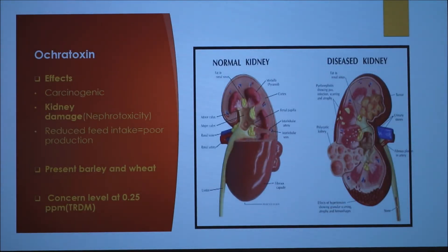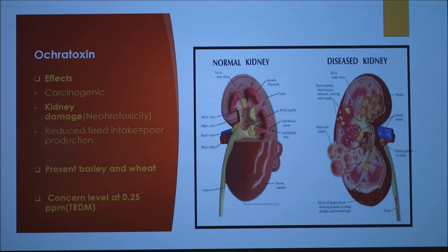Next we have ochratoxin, which is also a carcinogen, but instead of being a hepatotoxin it is a nephrotoxin, meaning it causes kidney damage in our domestic species, as well as reducing feed intake. Ochratoxin is present in barley and wheat, and the concern level is 0.25 parts per million.